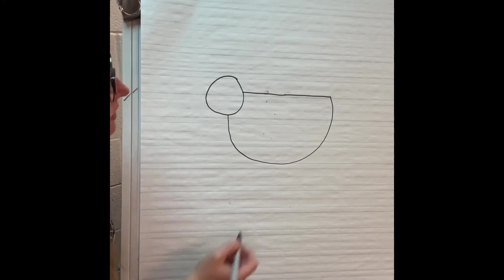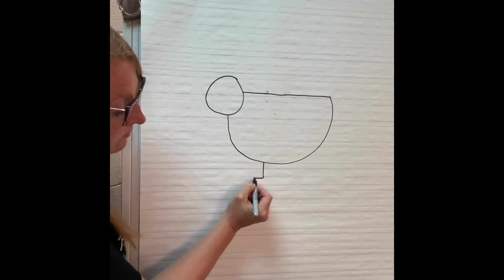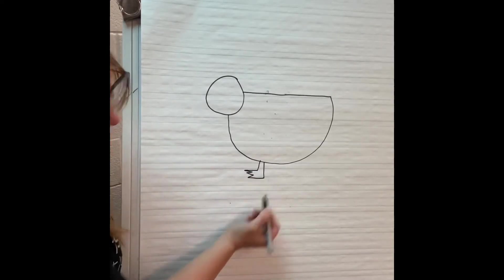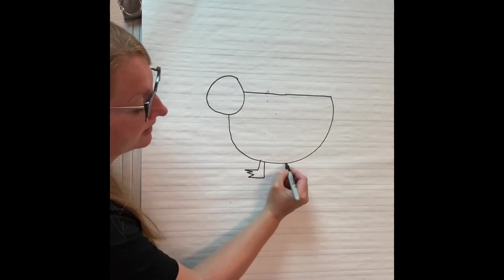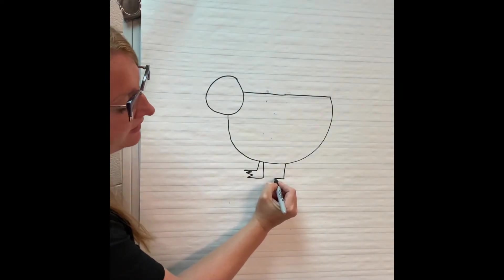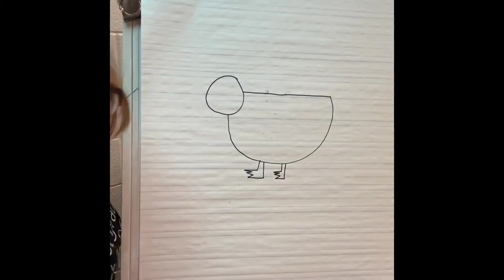Now I'm going to go ahead and draw two webbed feet. So I'm going to draw one line down, one line out and then kind of like some three zigzags and then back up and let's do another one line down, over, so it's like a backwards L and then three zigzags and up.